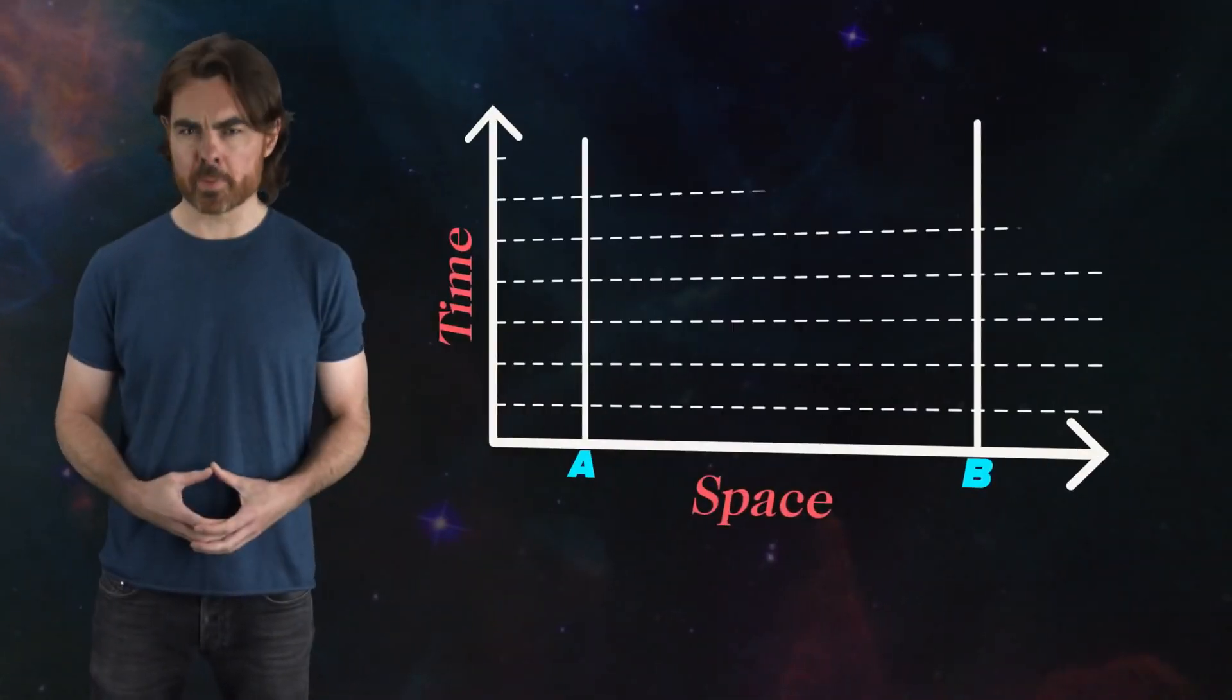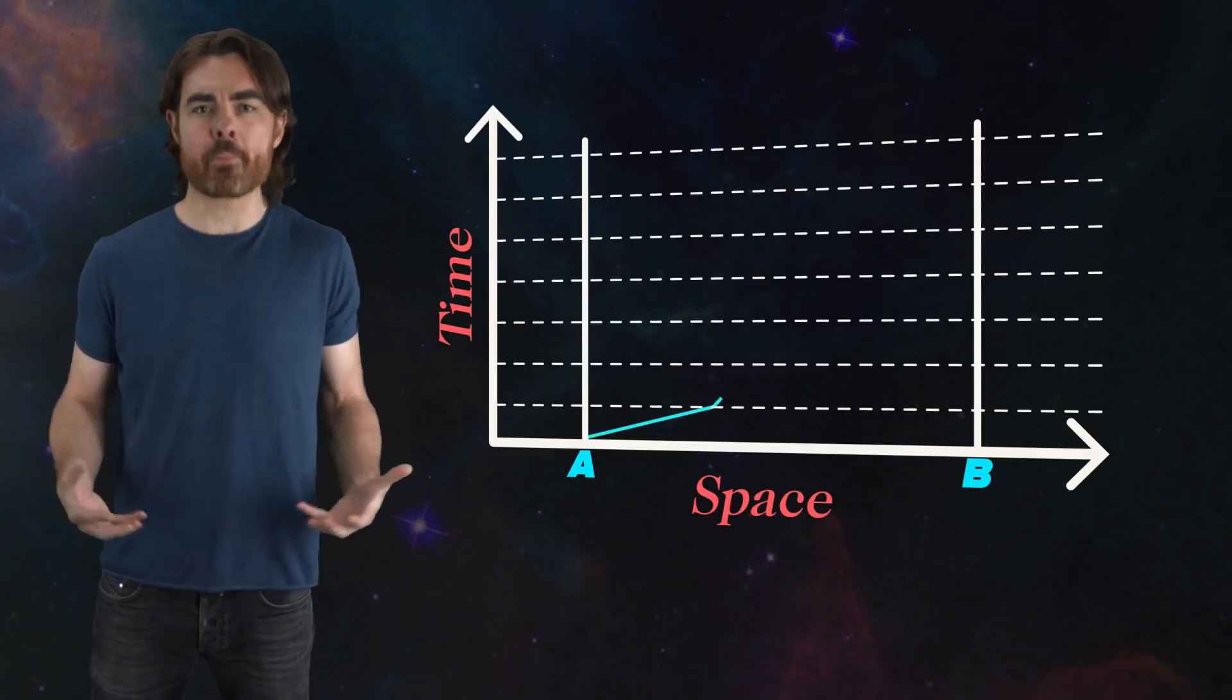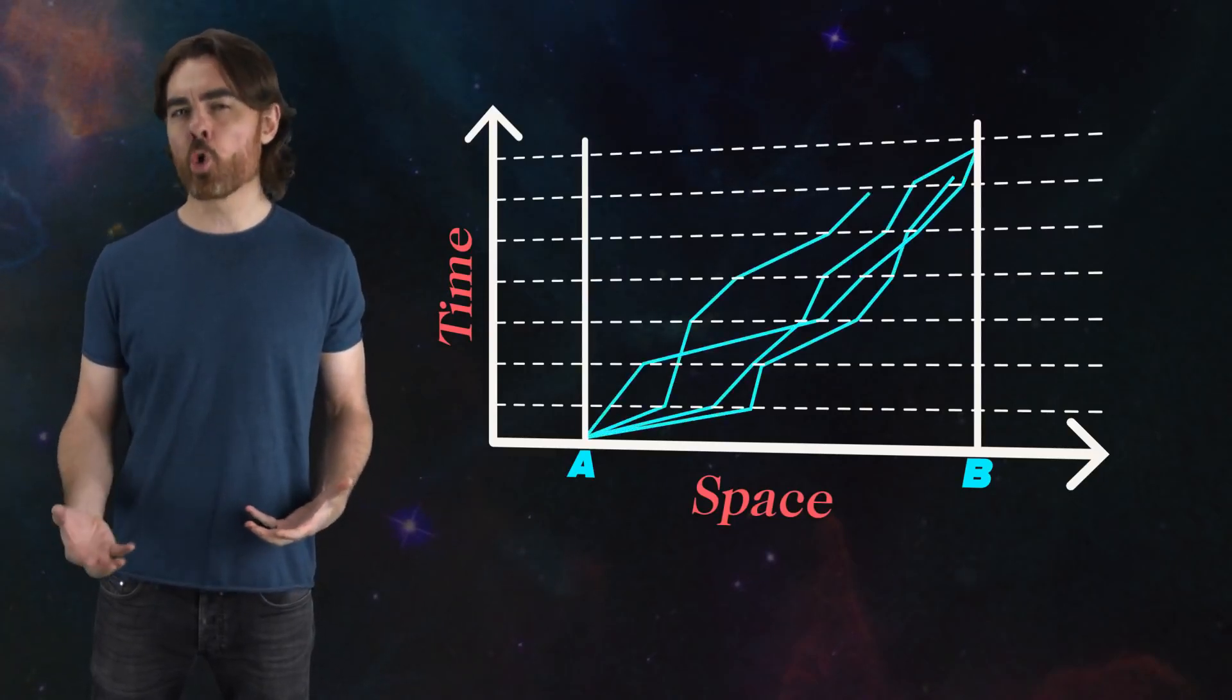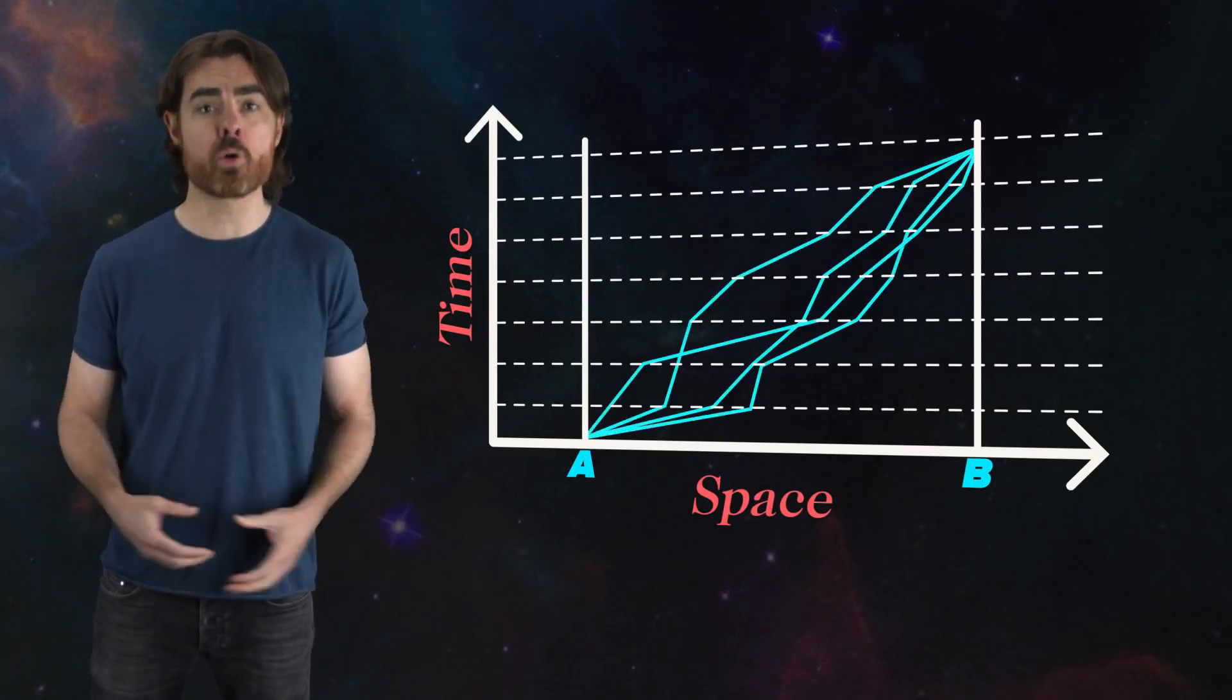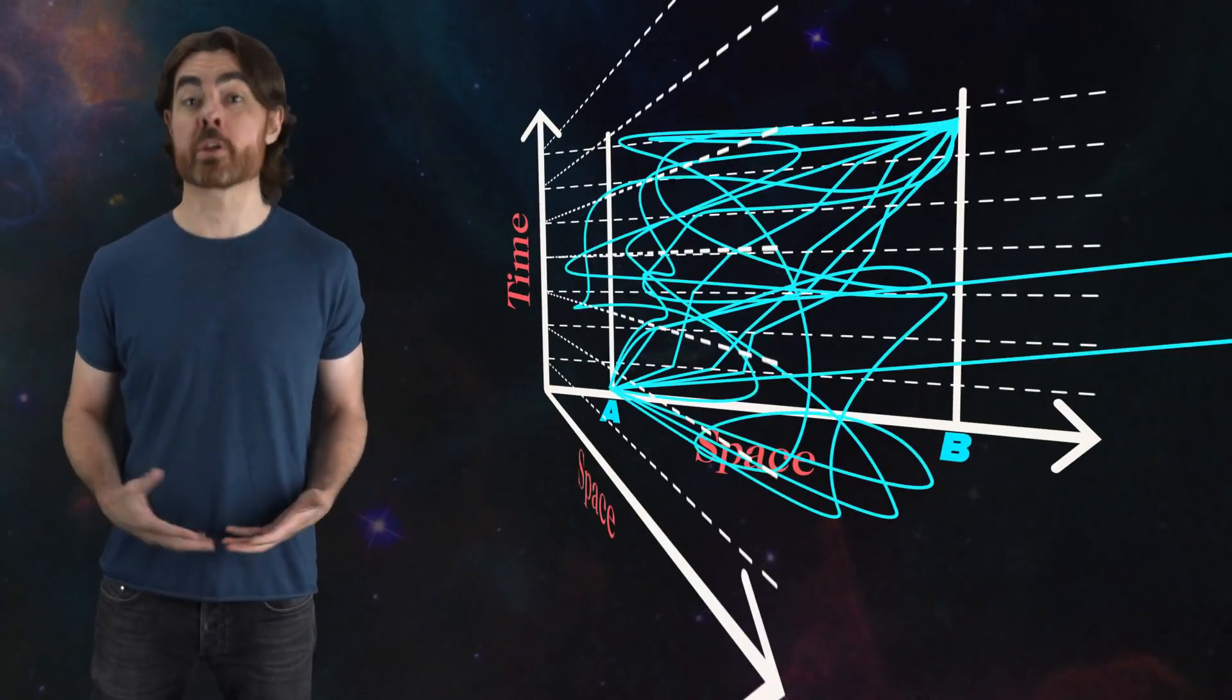Feynman's path integral shows us that to properly calculate the probability of a particle traveling between two points, we need to add up the contributions from all conceivable paths between those points, including the impossible paths. In fact, we can go even further.